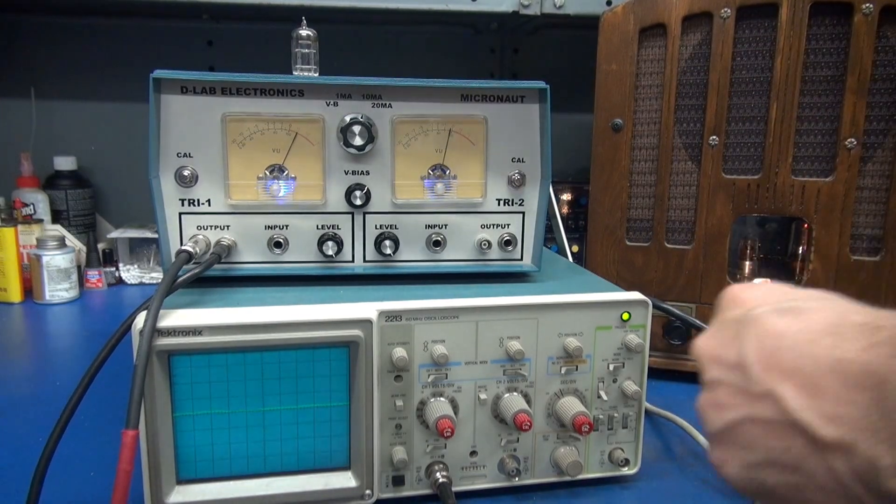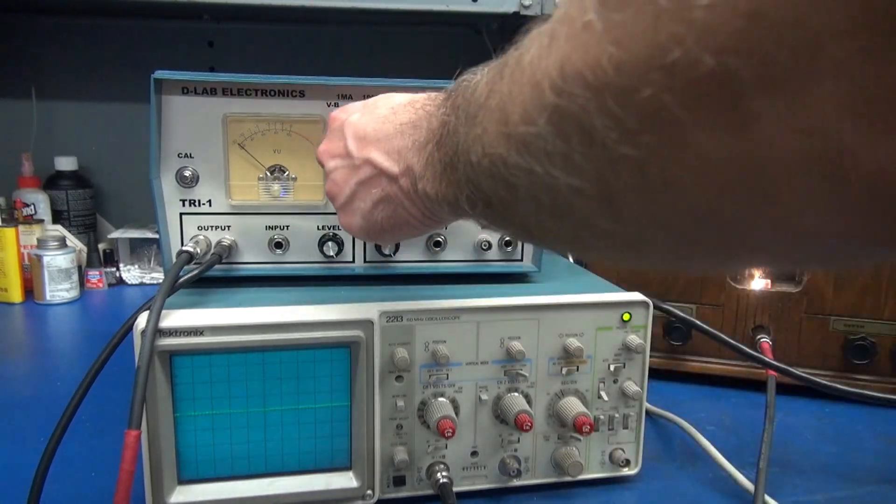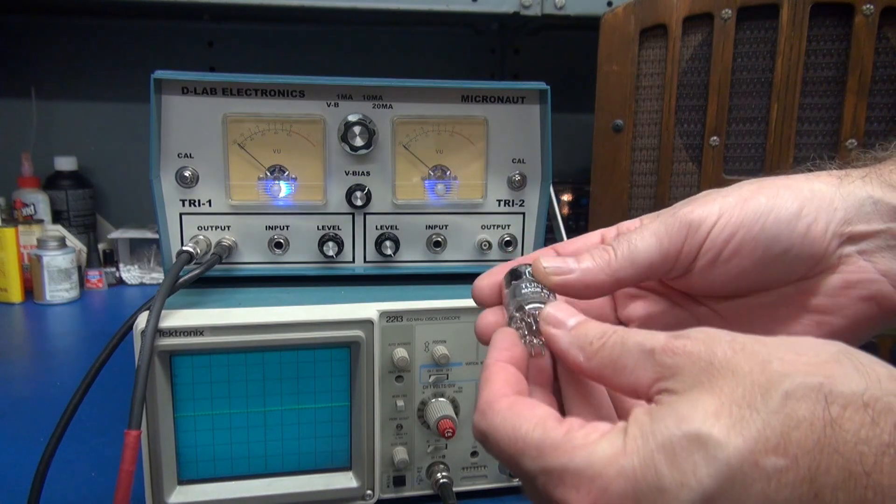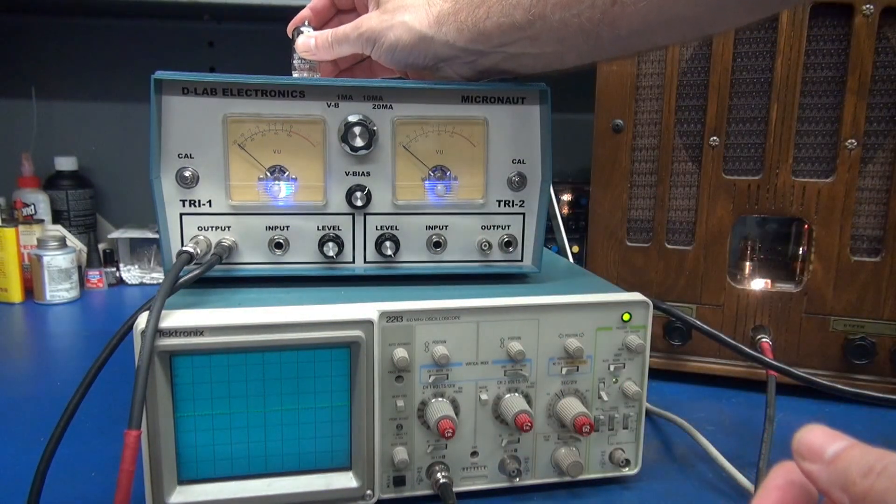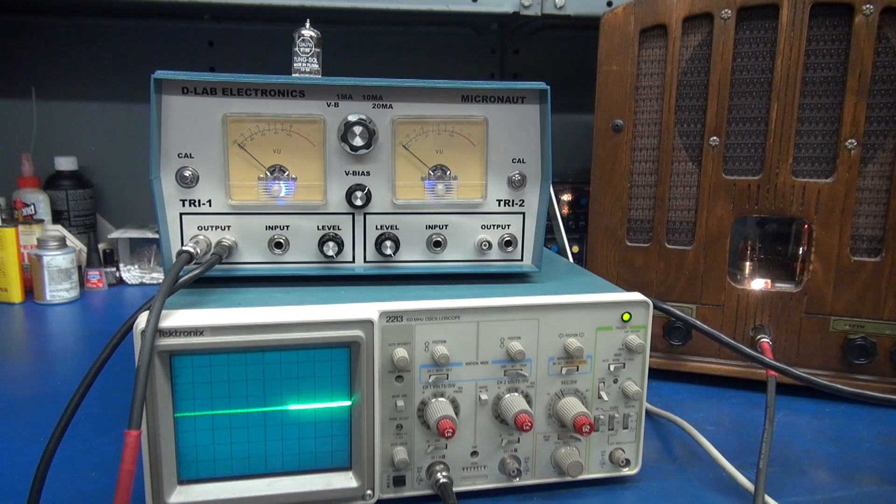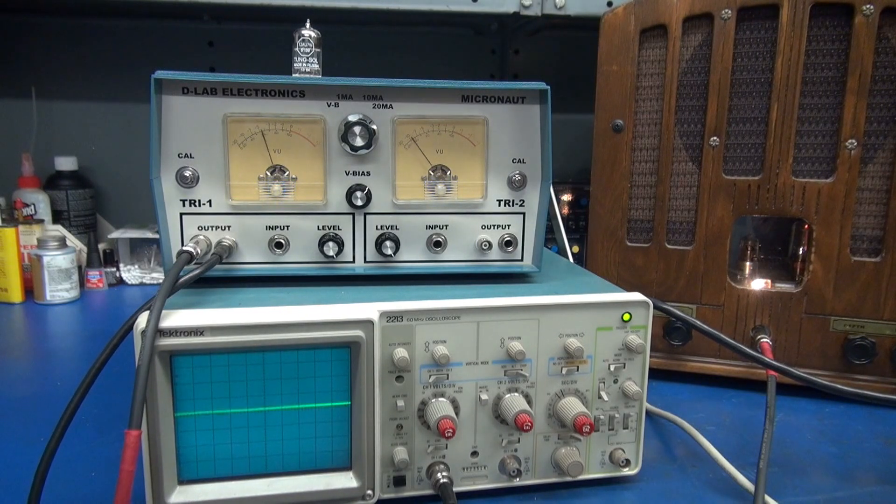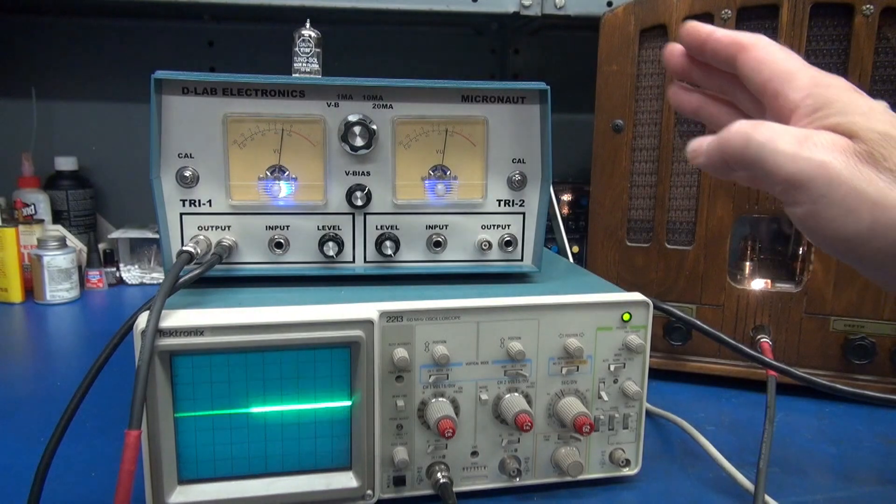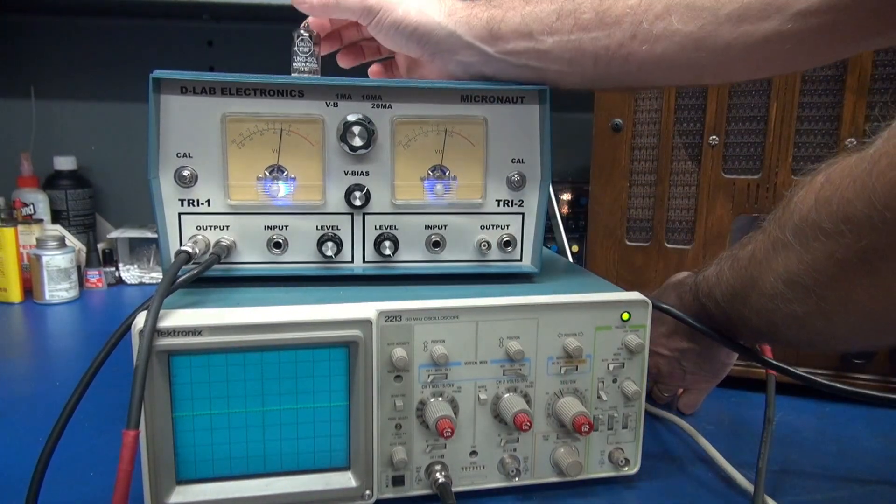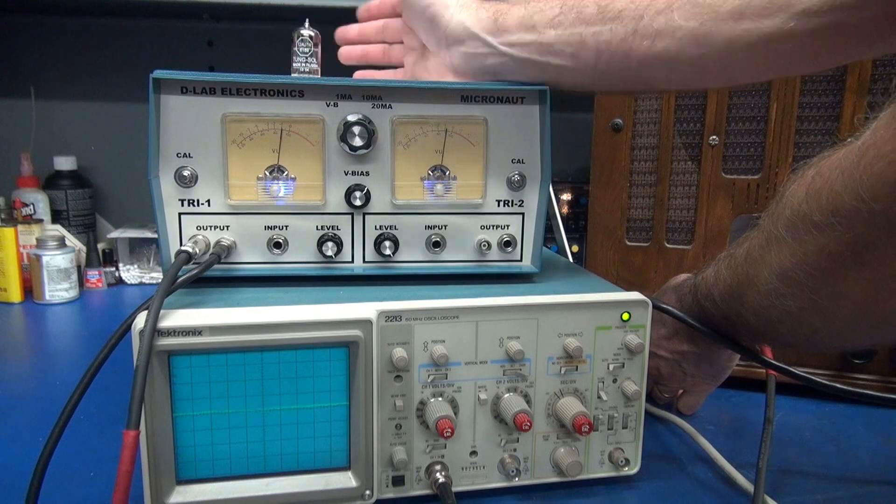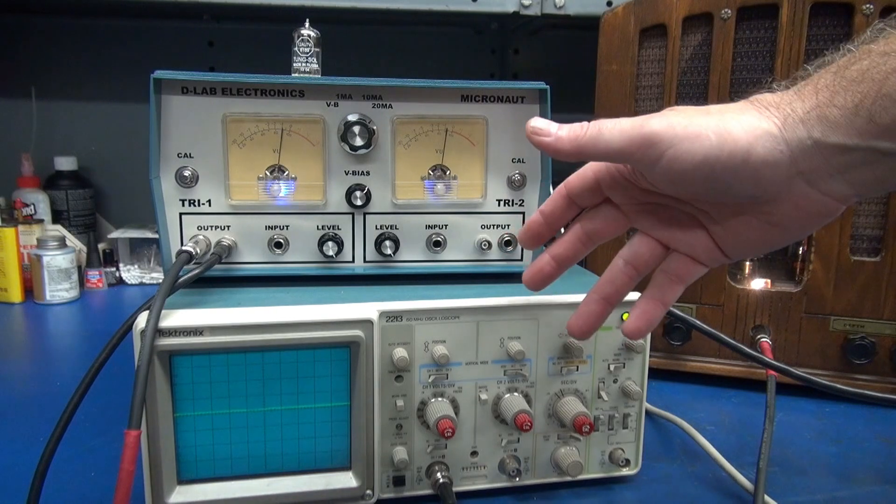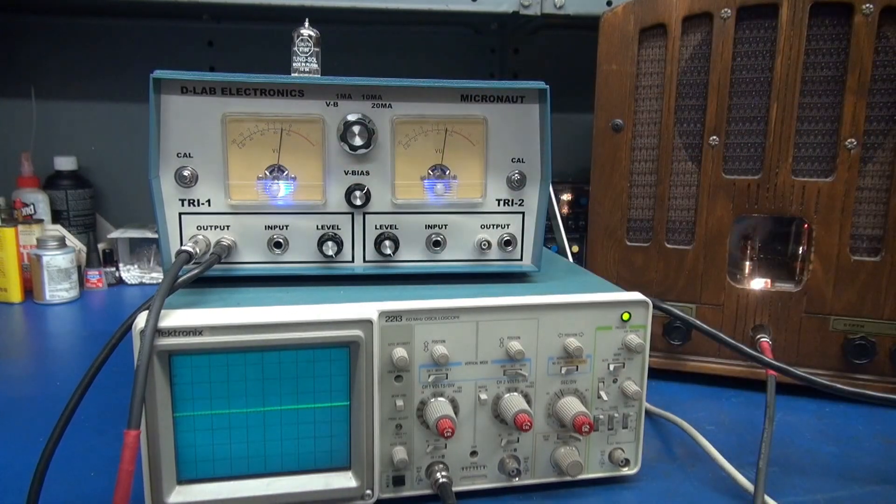Now let's go to a 12AU7. So you simply unplug it. 20 milliamp position now for the 12AU7, which is used in the SVT amps. 12AU7, since it draws more current, you'll see the meters swing and then return. Let's see what it sounds like. Once again, good tube. That's a brand new Tung Solit, by the way, so we would expect that to be good. Nice and balanced.